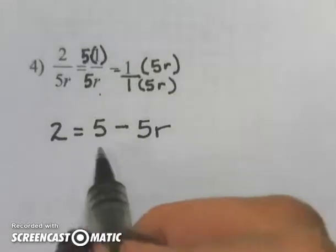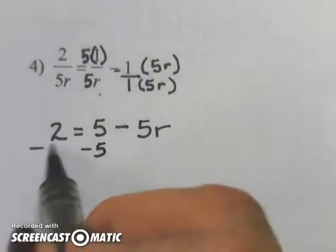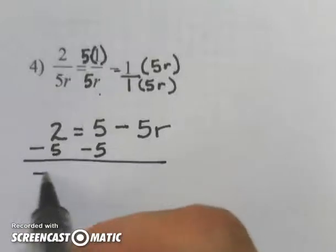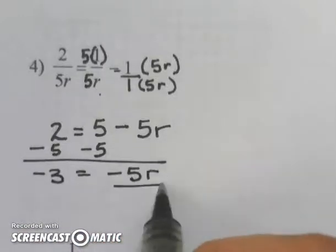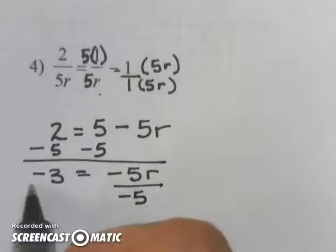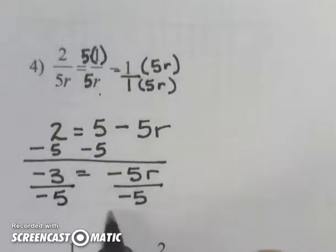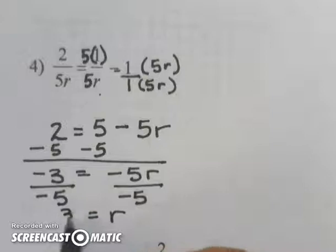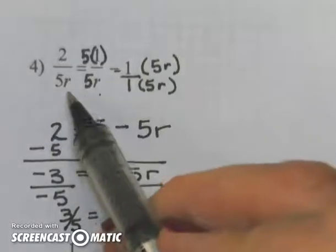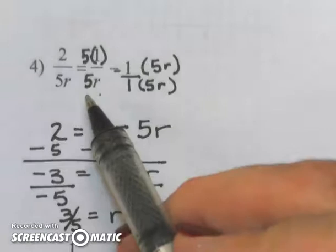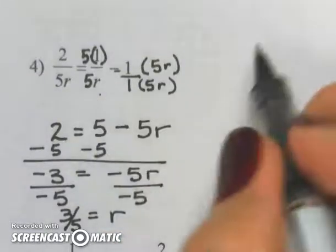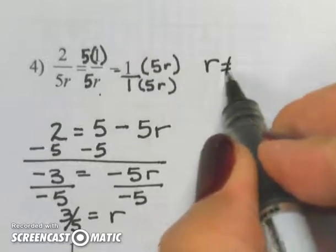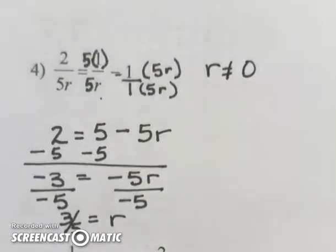I want to isolate the r, so I'm going to subtract 5. Negative 3 is equal to negative 5r. Divide by negative 5, and r is 3 fifths. Again, I need to make sure I check my denominator in my original problem. I had an r on the bottom. Therefore, r cannot be 0. That is the restriction of my domain.